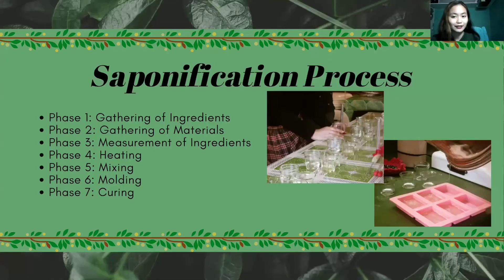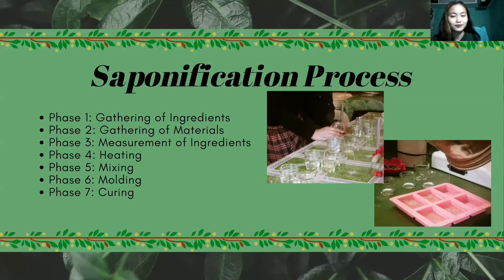Next, let us discuss the phases in the saponification or soap making process. Phase 1 is the gathering of ingredients, where we acquire each ingredient as mentioned in the previous slide. Phase 2 is the gathering of materials, which would be the tools and equipment used in order to make the soap. Phase 3 is the measurement of ingredients, where all ingredients are quantified to the amount required. Phase 4 and 5 are interconnected, because phase 4 is the heating of the glycerin base for it to melt, and phase 5 is the mixing of all measured ingredients to the heated glycerin base.